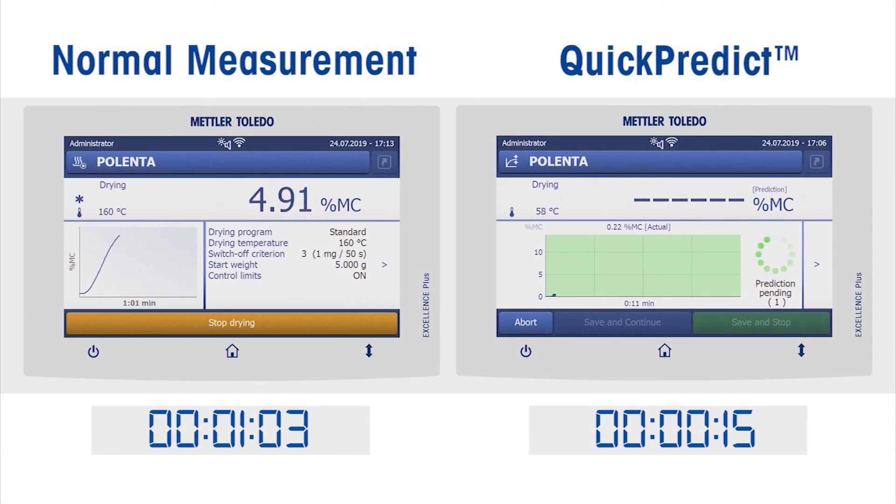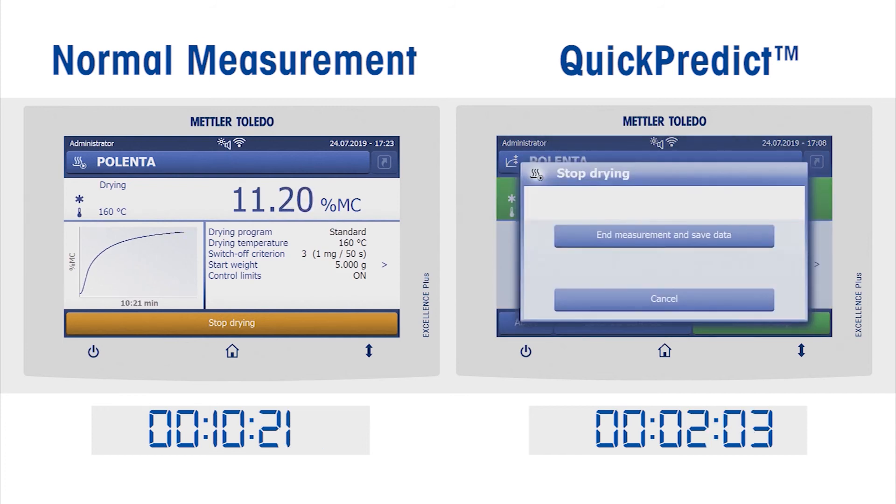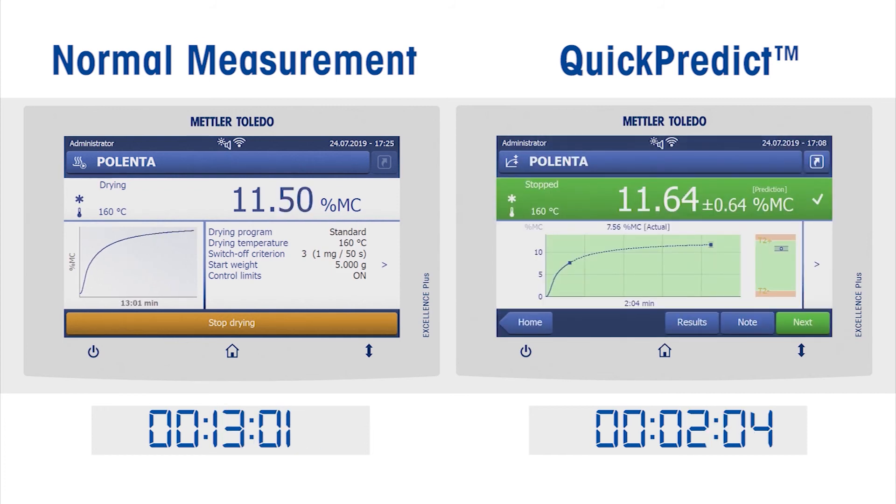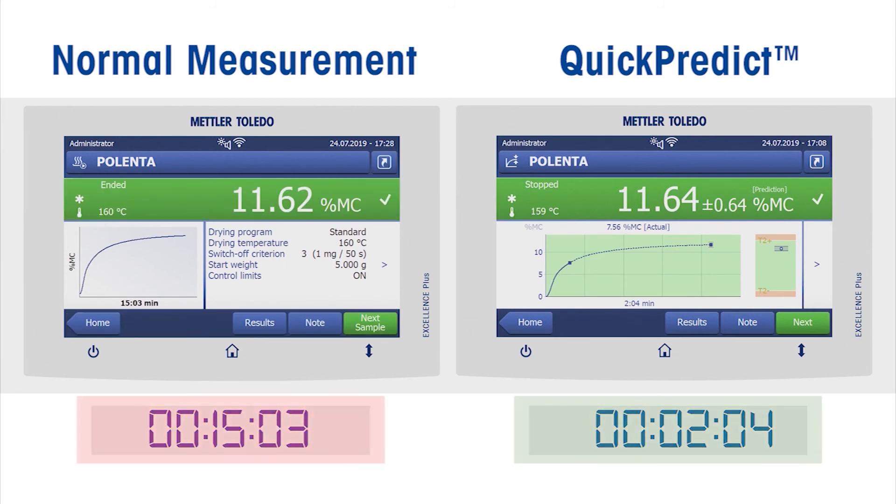In many processes, faster results mean faster decisions and less downtime. Some instruments offer additional software which predicts the final result based on reference measurements. Depending on the sample, this can reduce the time to result by up to 90 percent.